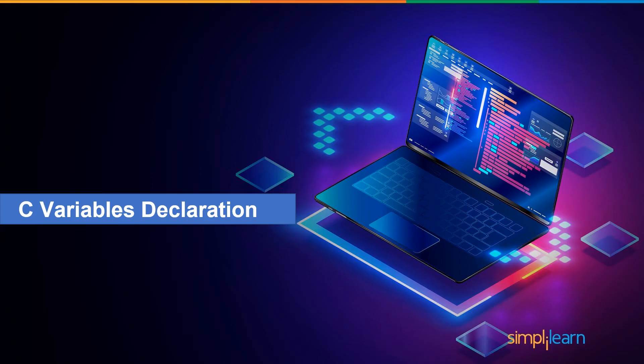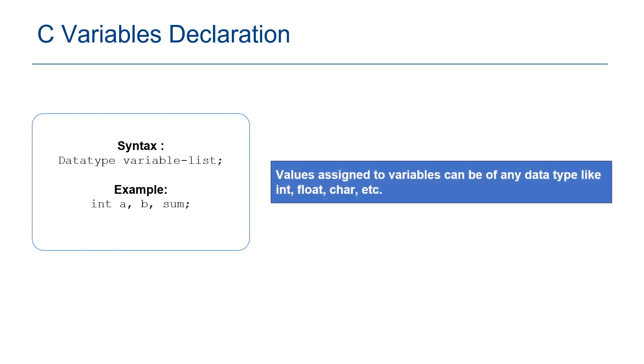Let us now understand variable declaration in C with the help of syntax and examples. Syntax of variable declaration is data type, variable list, and semicolon at the end. Values assigned to variables can be of any data type like int, float, char, etc. In this example, int is a data type, and a, b, and sum are the variable list.